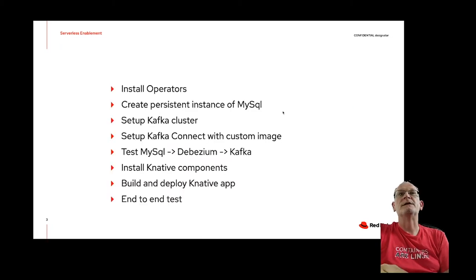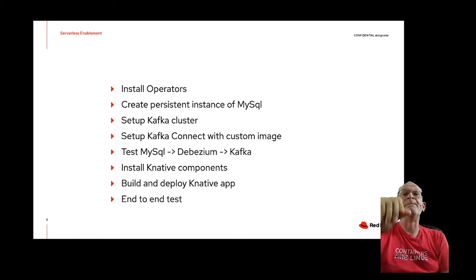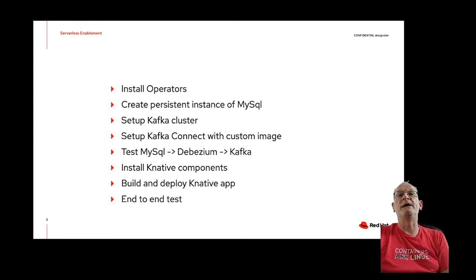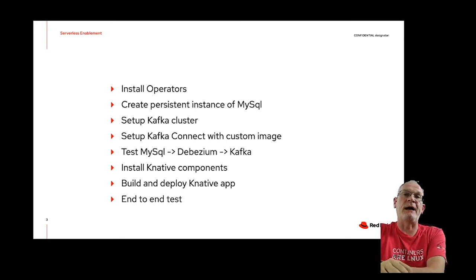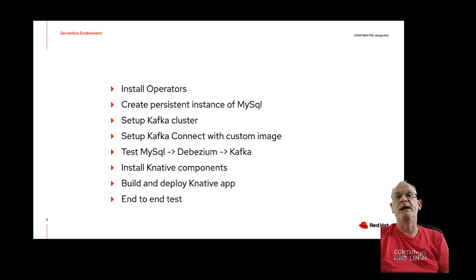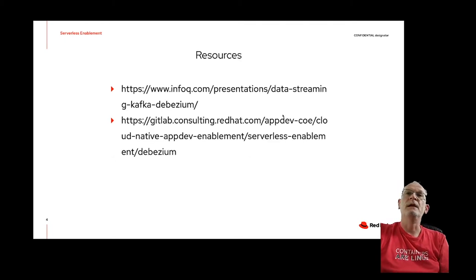At a high level, we're going to go through the following sections: install the operators required to manage Kafka for OpenShift Serverless and the Kafka event source; create a persistent instance of MySQL; set up the Kafka cluster; set up Kafka Connect with the custom Debezium image; test the MySQL-Debezium-Kafka integration to make sure we're getting messages on Kafka from MySQL; then go through the Knative setup, build and deploy our Knative app; and finally do an end-to-end test making updates to MySQL through Kafka to the Node.js app.